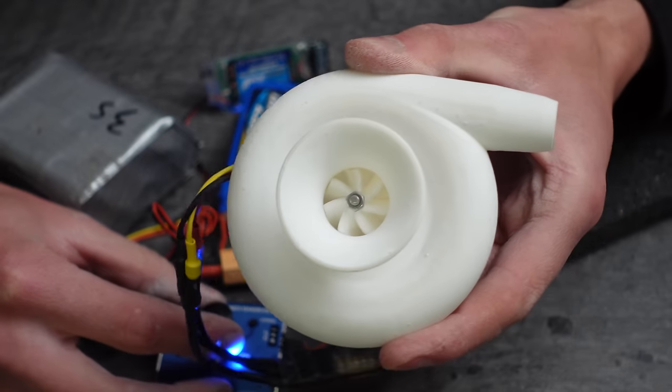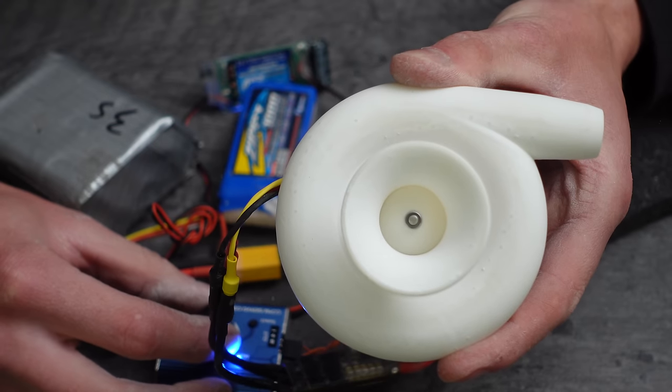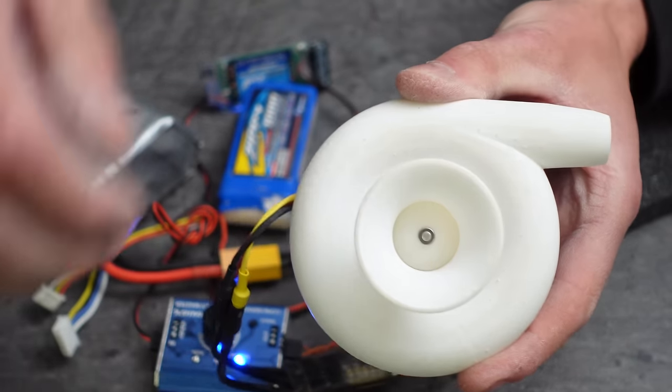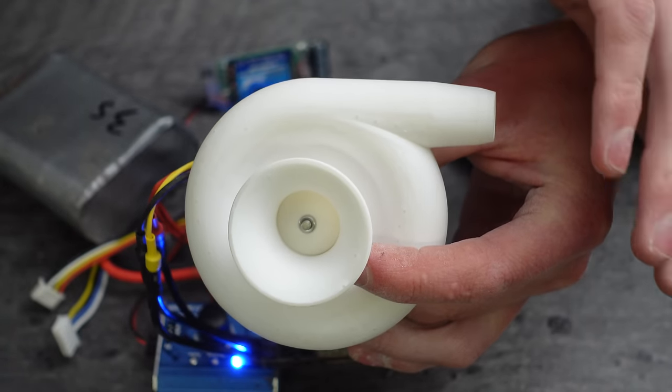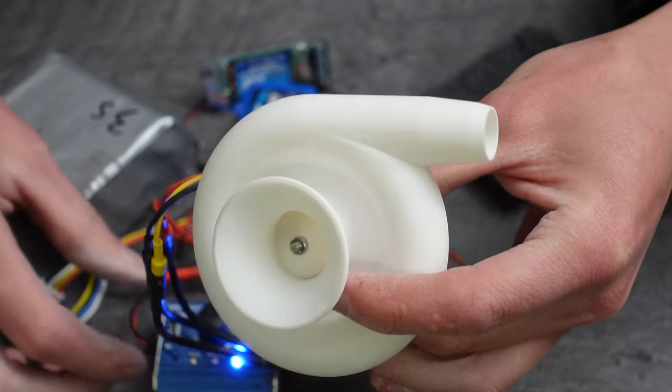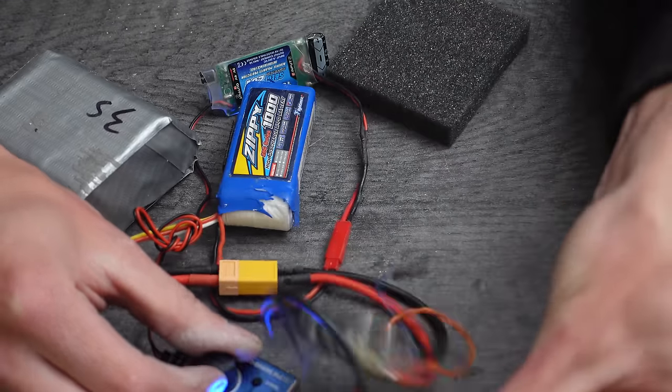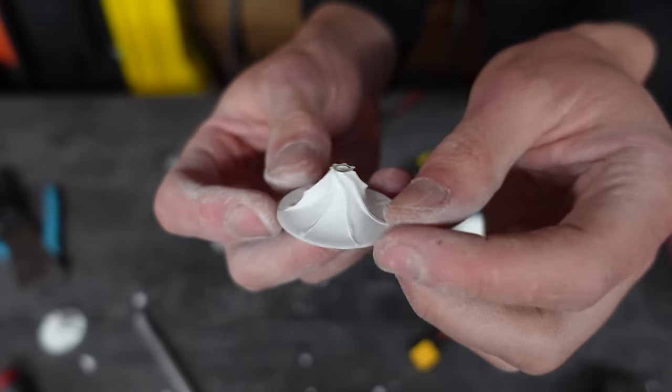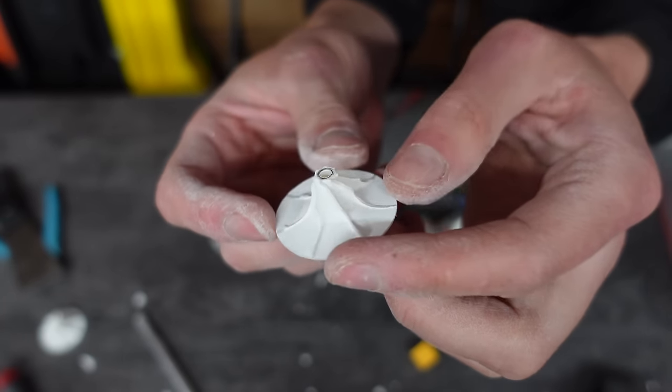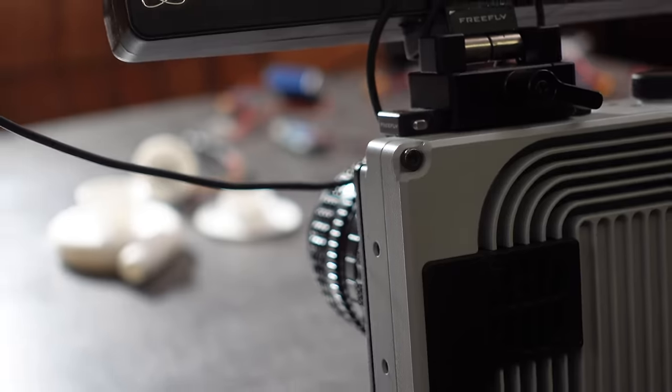The first time I spun it up, there was a bit of rubbing, but that problem quickly solved itself. But then, with a little more power, it blew up. All the blades broke off the impeller. This probably happened because the motor mount worked itself loose. I didn't have it properly attached to the snail housing. Then, the impeller hit the sides and shattered.